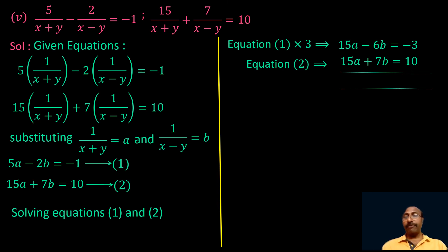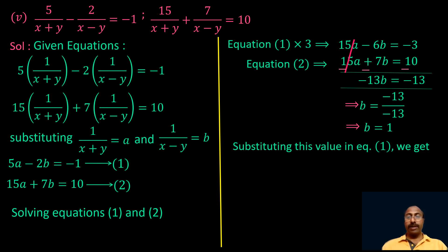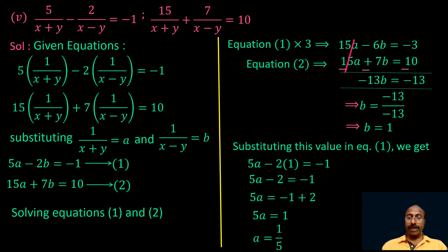Subtracting the two equations, 15a minus 15a cancels. Then minus 6b minus 7b equals minus 3 minus 10, giving minus 13b equal to minus 13, so b equal to 1. Substituting b equal to 1 in equation 1: 5a minus 2 into 1 equal to minus 1, so 5a minus 2 equal to minus 1, 5a equal to 1, therefore a equal to 1 by 5.